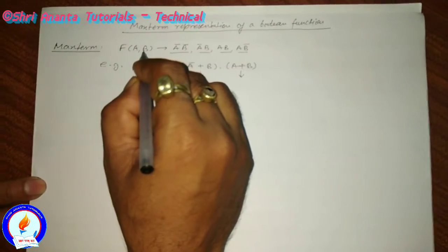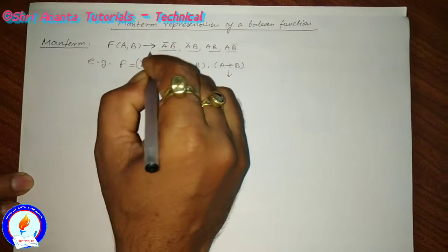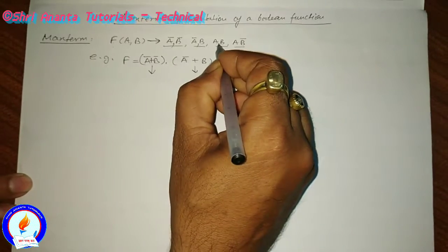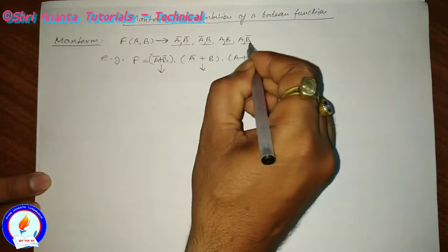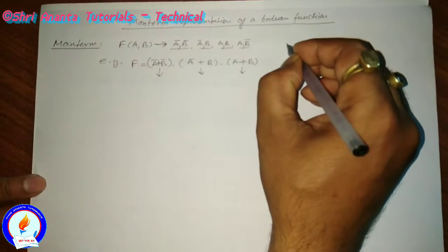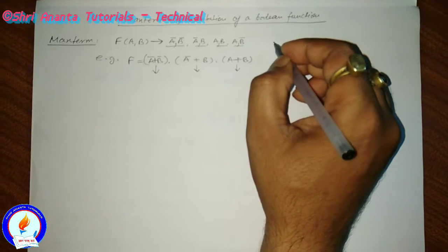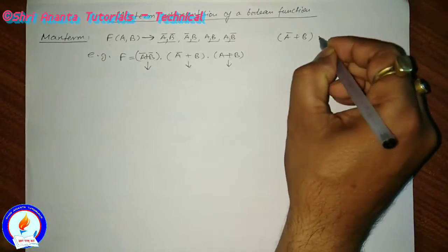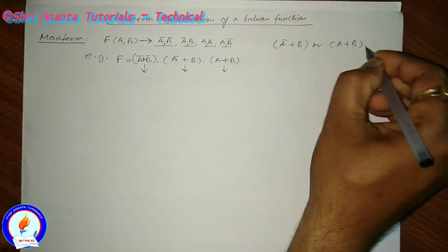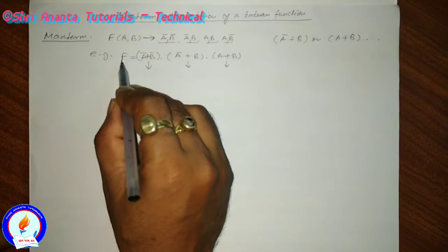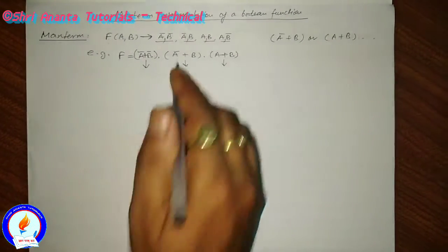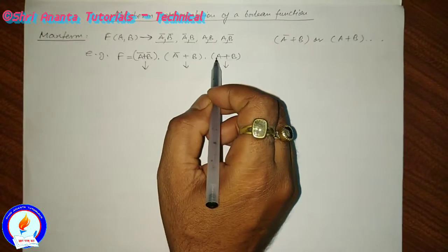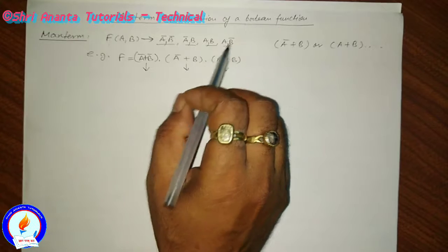If f is a function of two variables, then this function will consist of terms either a-bar or b-bar, or a-bar or b, or a or b, or a or b-bar. Any individual term of a max term will be like a-bar plus b, or a-bar plus b, or something like that, and the entire function will be a combination — an AND operation — of these terms. This type of representation is called max term representation of a boolean function.